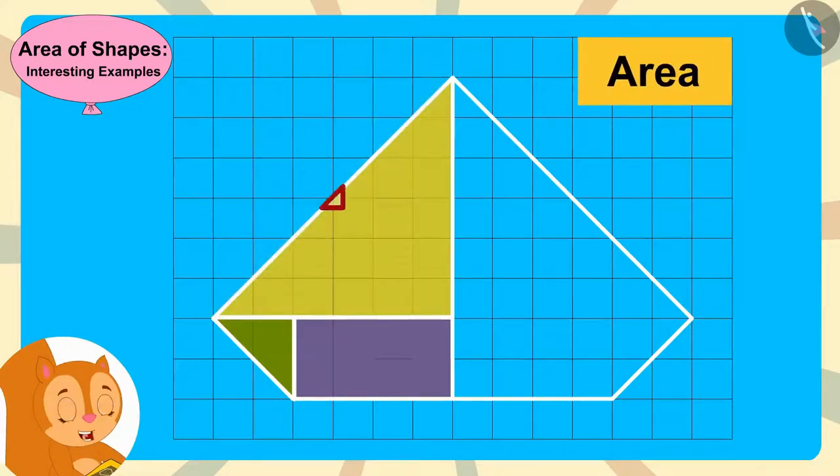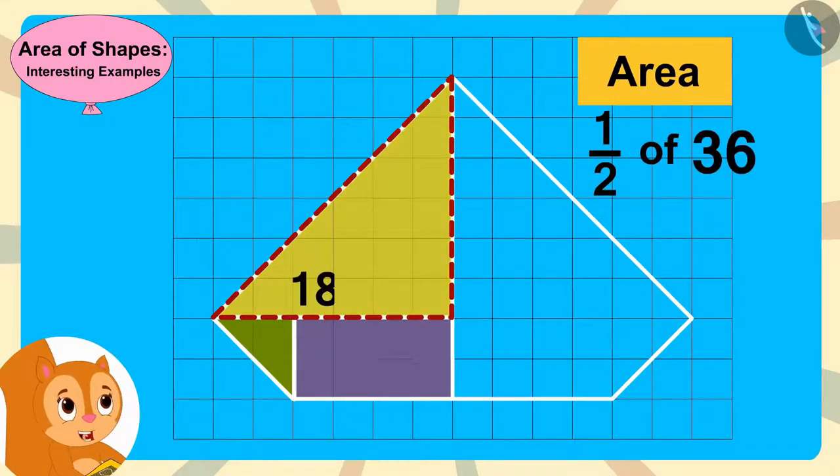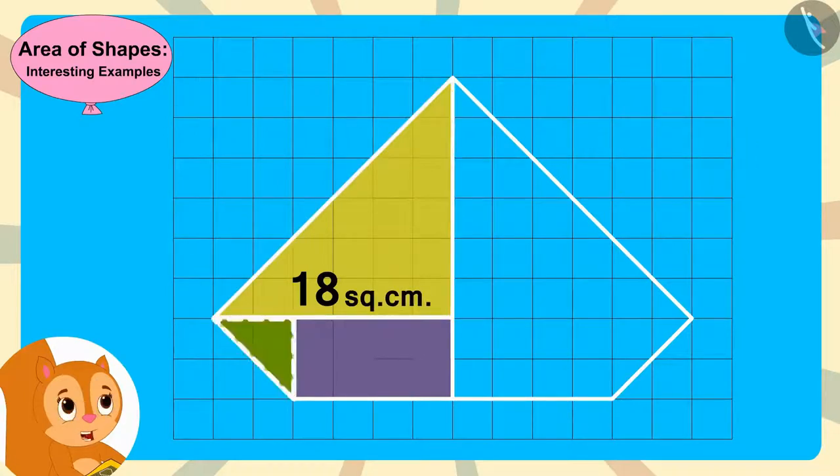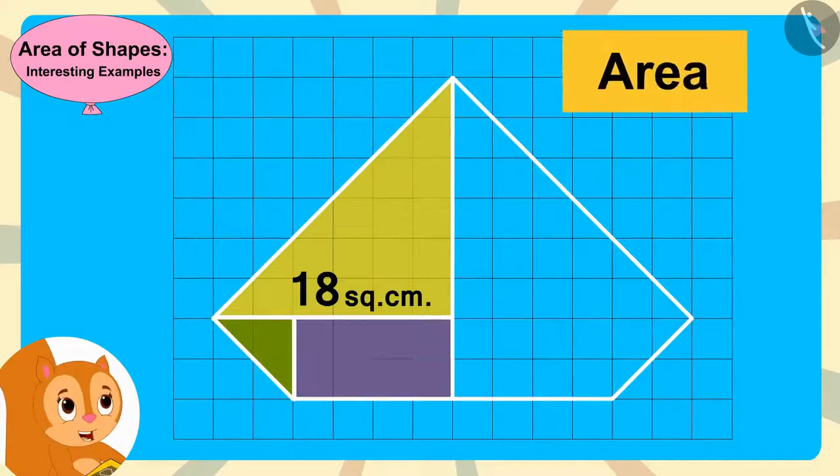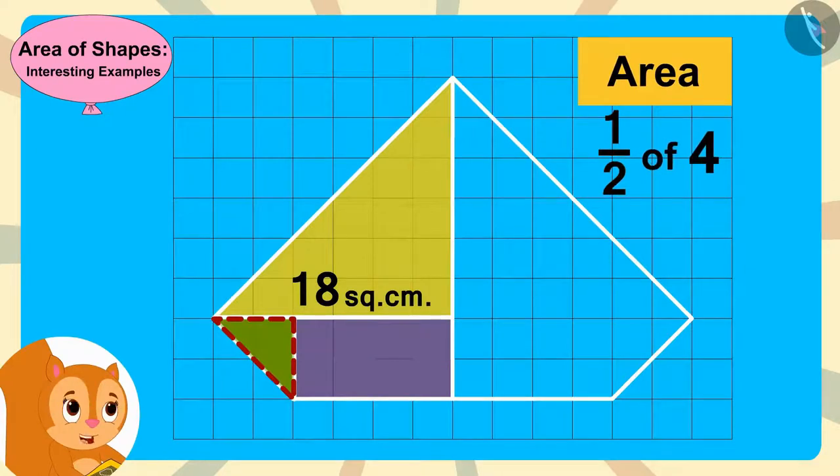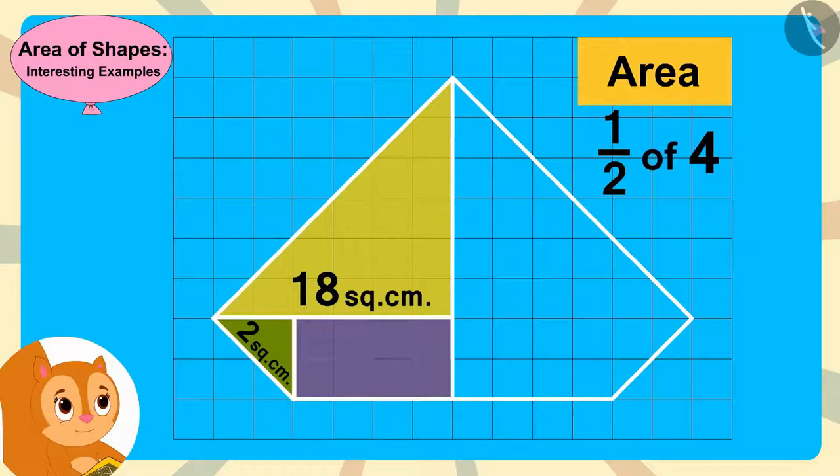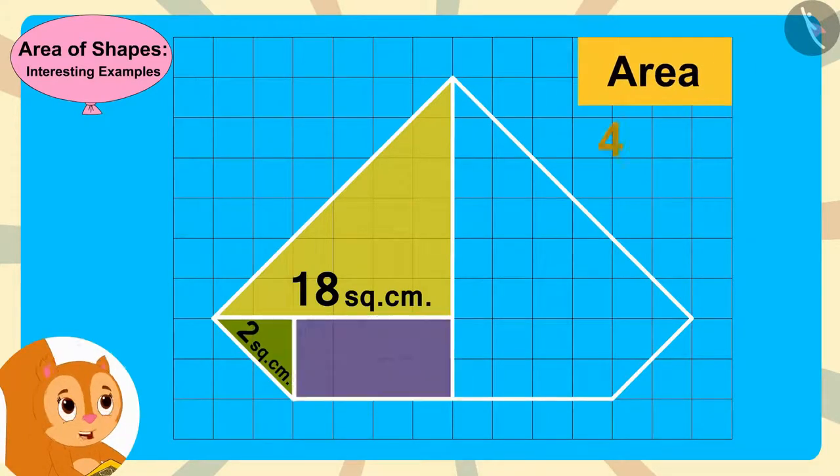So the area of this big triangle is half of 36, or 18 square centimeters. This small triangle is half of this rectangle, and the area of this rectangle is 2 times 2, or 4 square centimeters. So the area of this small triangle is half of 4, or 2 square centimeters. And finally, the area of this rectangle is 4 times 2, or 8 square centimeters.